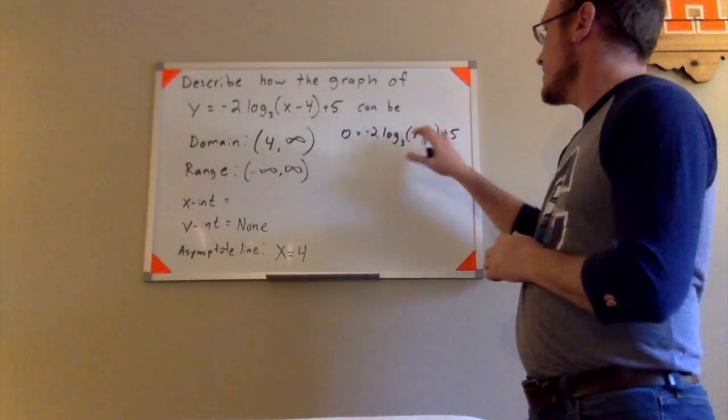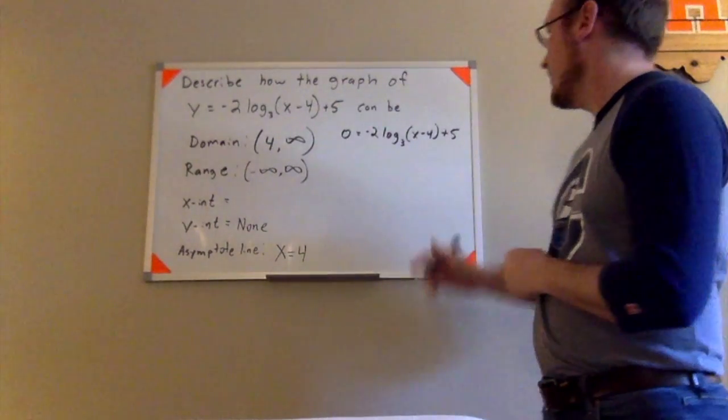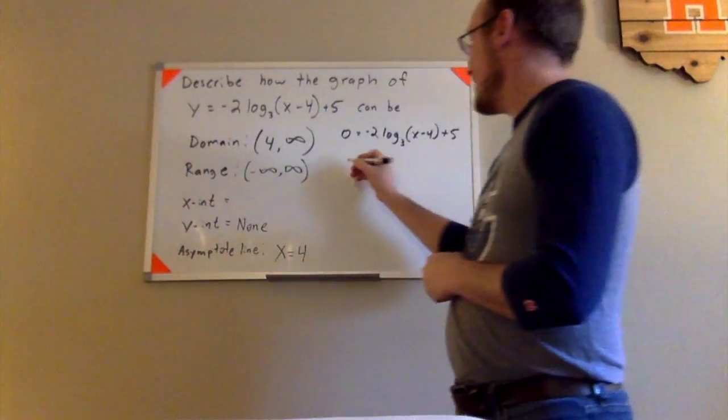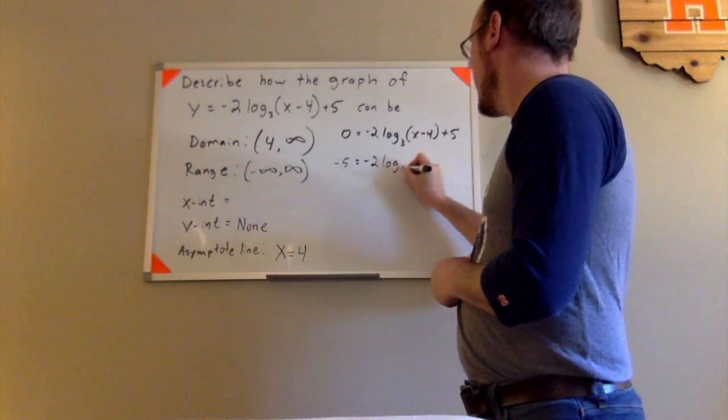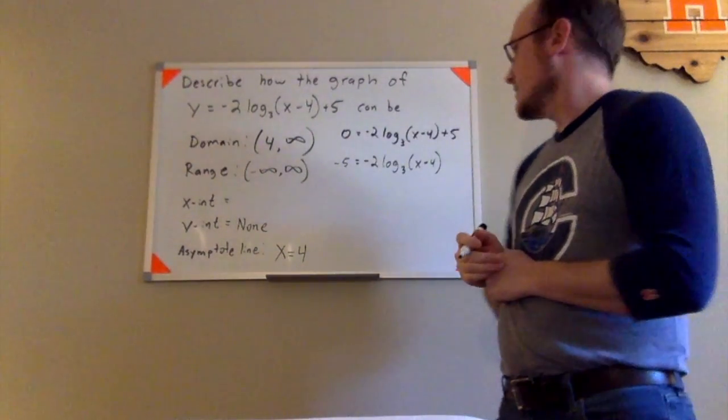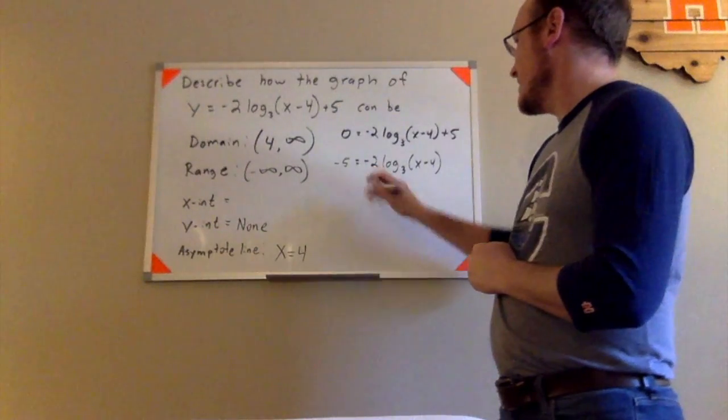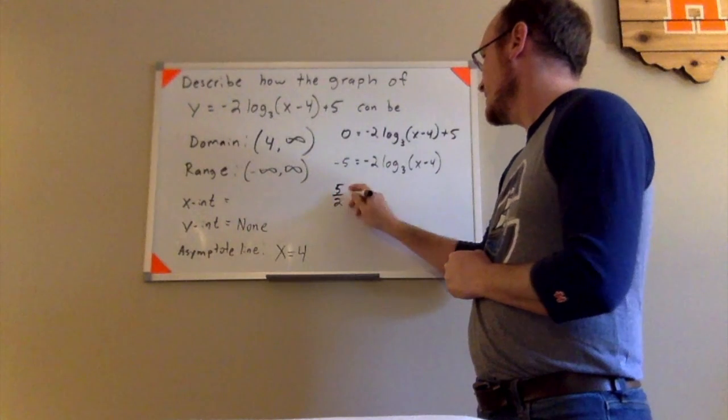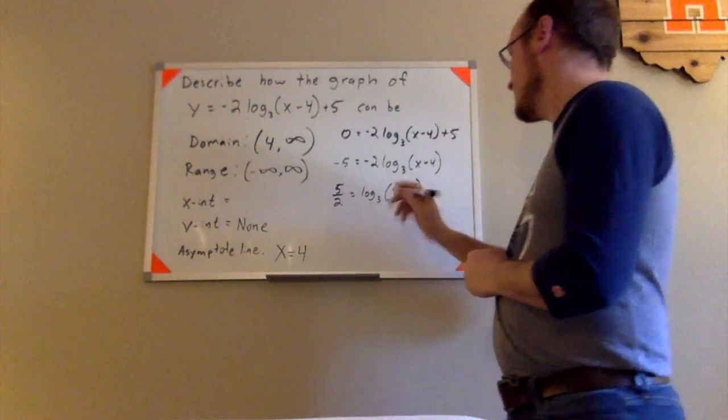And then I'm going to go ahead and try to solve this for x. Now you might be wondering how you do that, I'm going to show you that right now. The first thing I would need to do would be to get this plus 5 to the other side. So I'll have negative 5 equals negative 2 log base 3 of x minus 4, like so. Then I'll get rid of the negative 2 right there by dividing both sides by negative 2. That will give me 5 halves equals log base 3 of x minus 4.